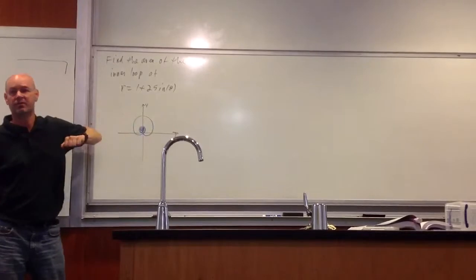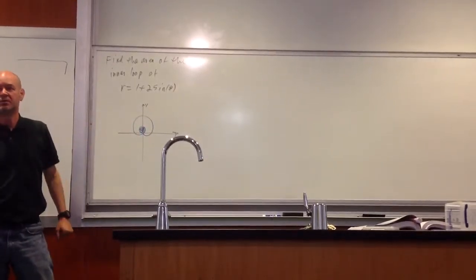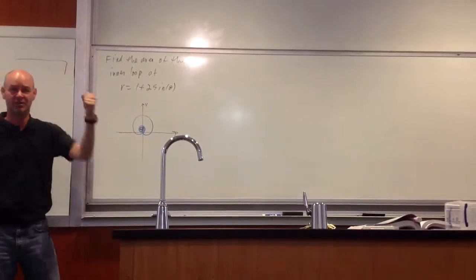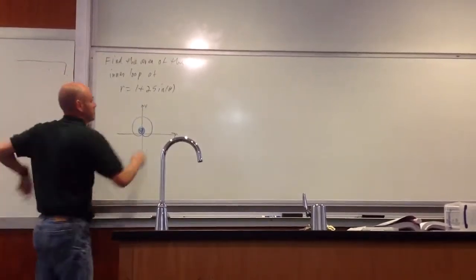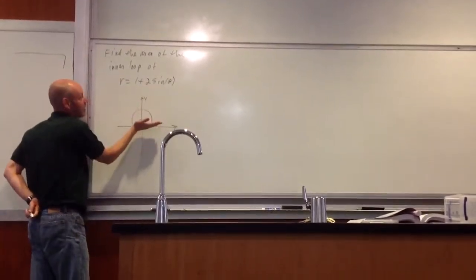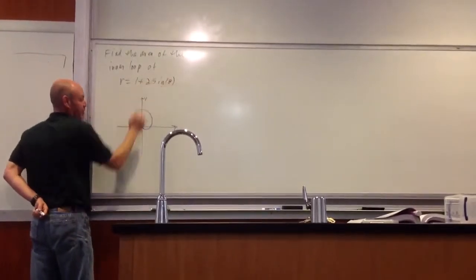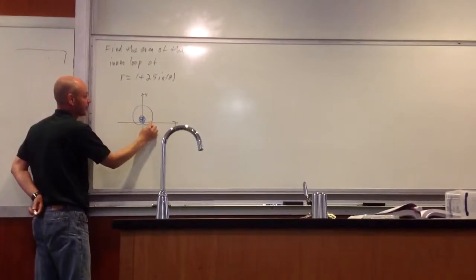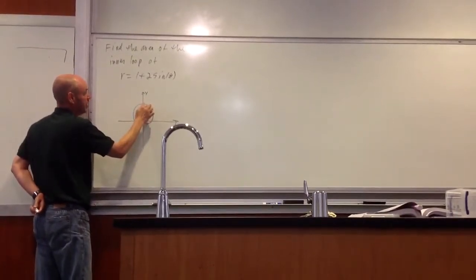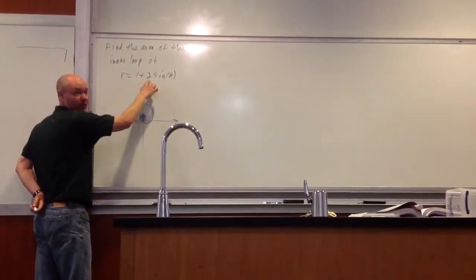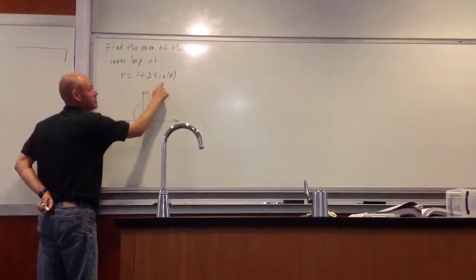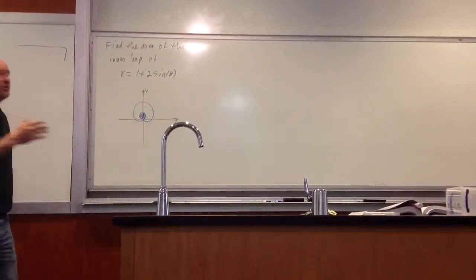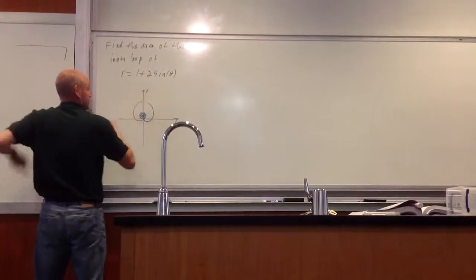What's the sine of zero? Zero. So when theta is zero and I'm down here, that means r is equal to one. So when you graph it, it starts here, it goes here, and it maxes out at three. Because at pi over two, sine is one — that's the most it will ever be. So I'm going to get three up here, so this is three here.